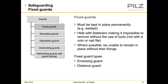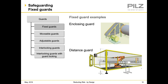Fixed guards should be permanently welded in place or held with fasteners such as bolts — they should not be removable with a coin or nail file. These can be closing or distance guards. A closing guard example: a motor with a rotating apparatus — we enclose it so fingers can't get caught in the chain and sprocket or belt and cog. A distance guard example: fencing around a robot so you cannot reach over it to contact the robot as it moves.